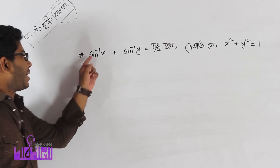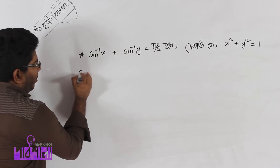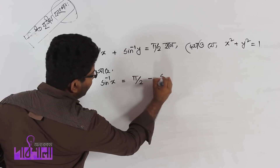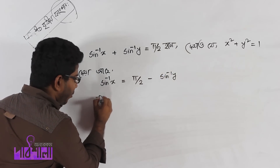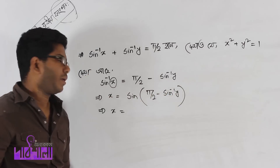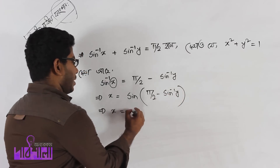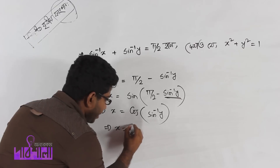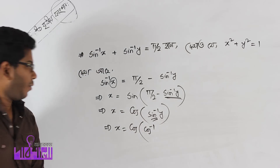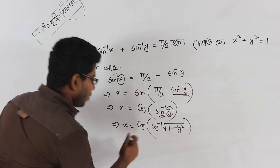Now let us move to another problem: if sin inverse x plus sin inverse y equal to pi by 2, prove that x squared plus y squared equal to 1. To start, sin inverse x equals pi by 2 minus sin inverse y. Taking sin on both sides, sin of the right side — recall that sin of (pi by 2 minus theta) equals cos theta.